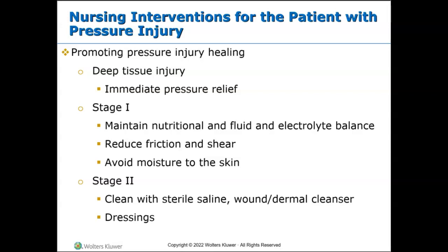For stage one ulcers, remove all pressure from the area, keep it clean and dry as possible to prevent bacterial infections, and speed up healing by having patients consume adequate calories with a diet high in protein first, then minerals and vitamins. For stage two, clean the area well with sterile normal saline and relieve pressure. Remove any loose or dead tissue by cleansing well with normal saline to start healing the damaged skin.